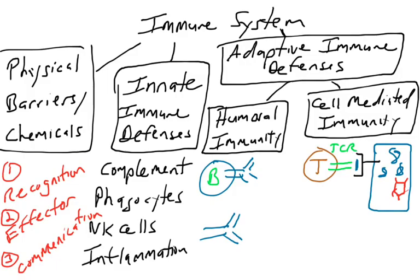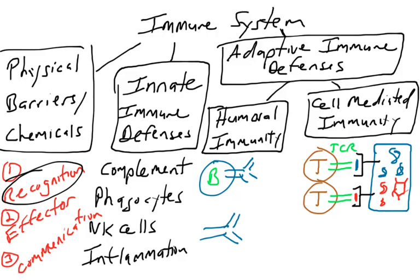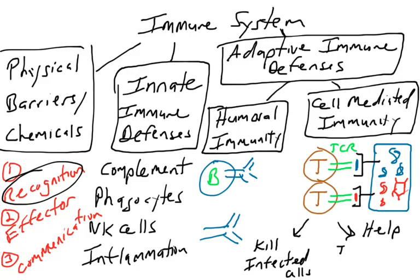If a cell is infected by a virus — if there's something inside the cell that is foreign, that is non-self, like foreign proteins — those foreign proteins will be presented on the surface of the cell, and the T cell will recognize that as non-self. That's recognition with the T cell receptor. Then there are a variety of effector functions: T cells wandering the body killing cells infected with pathogens, or releasing cytokines to help other immune cells.